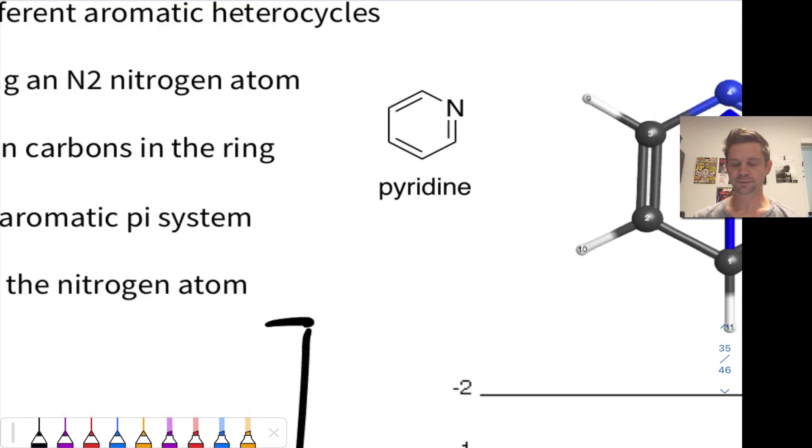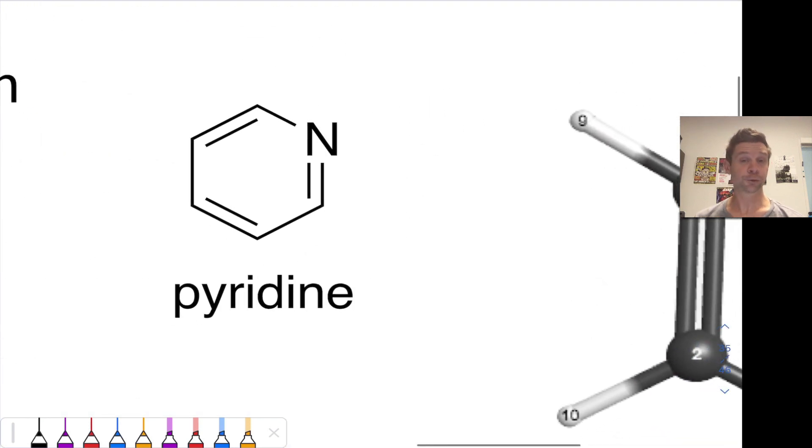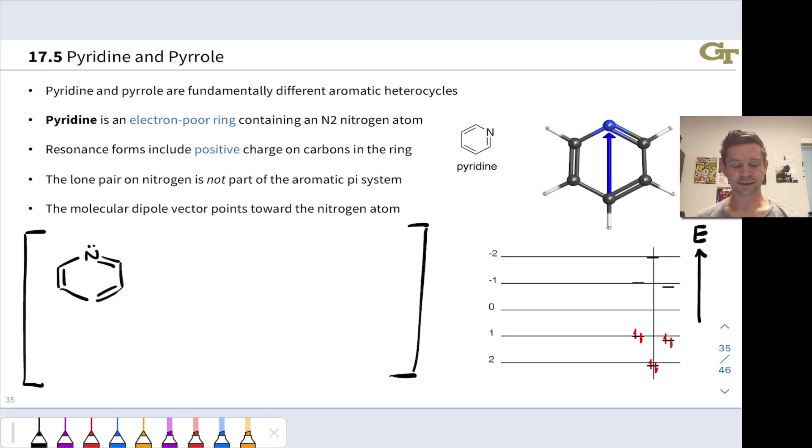Pyridine is a six-membered ring containing a nitrogen atom, specifically an N2 nitrogen right here within the ring. That's pyridine. Pyridine is an example of an electron-poor or electron-deficient heterocycle, and we can trace this to the N2 nitrogen atom.